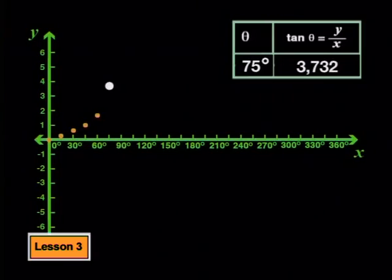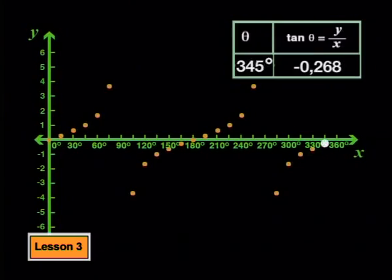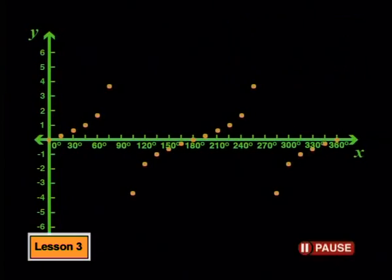It looks like these points are part of a curve up to here. But now we have to jump back down to this point, 105 degrees and negative 3.732. Then 120 degrees and negative 1.732. I've plotted all the points that we have from the table of values.